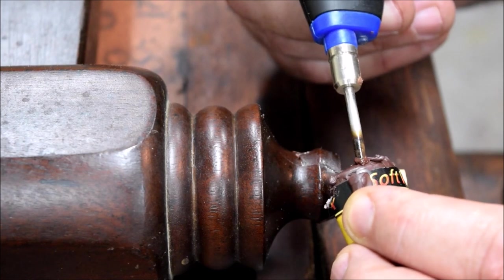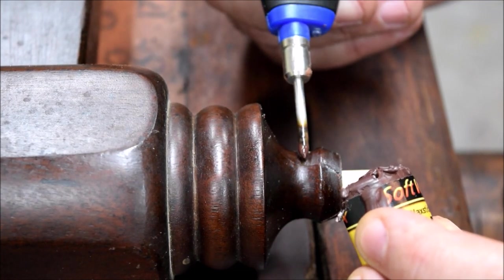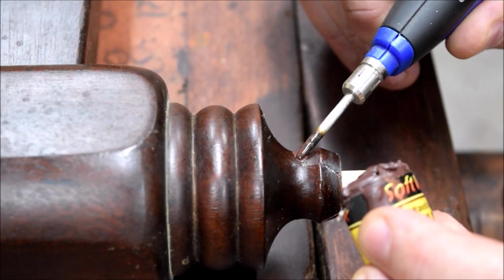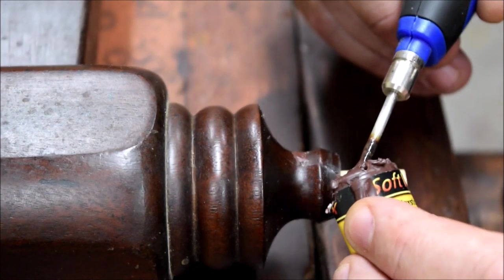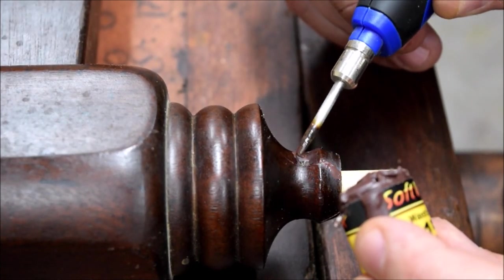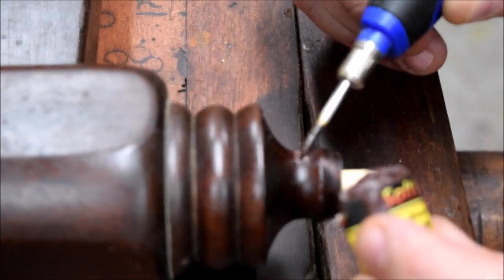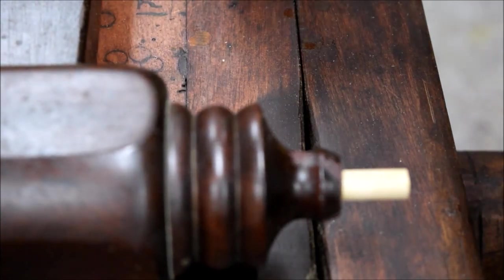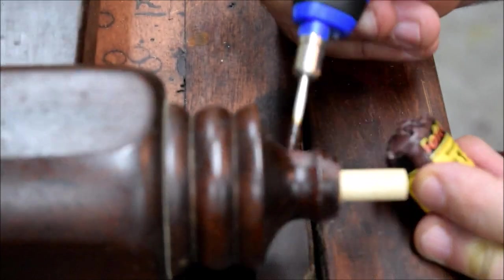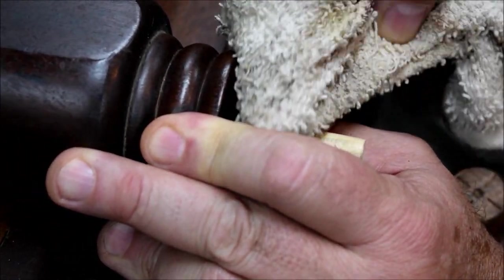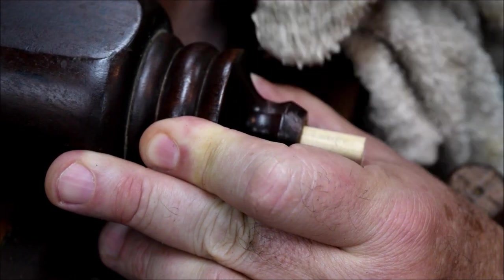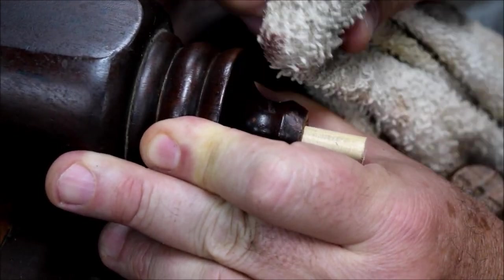I'm just using some soft wax and a tool that heats up. And we'll just flow a little wax into these cracks and conceal them. And we'll just remove any excess wax by rubbing with a terry cloth towel here and that takes it off every place except for where it's filled in a crack.